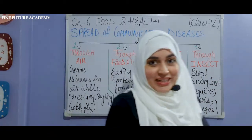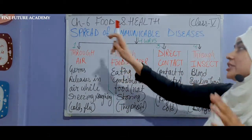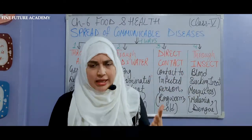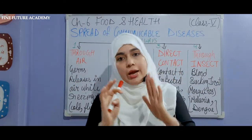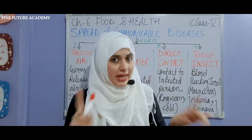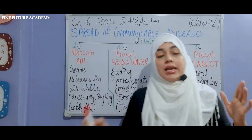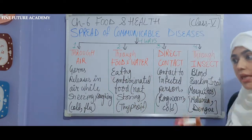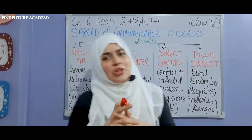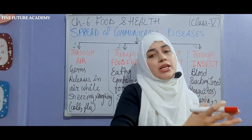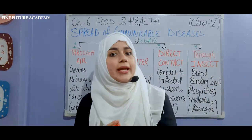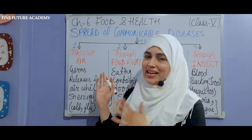In this video, we will start the spread of communicable disease. Communicable disease is spread by germs — germs you cannot see normally, but they are present in your body, skin, and environment. We will learn how disease can spread from one person to another person.